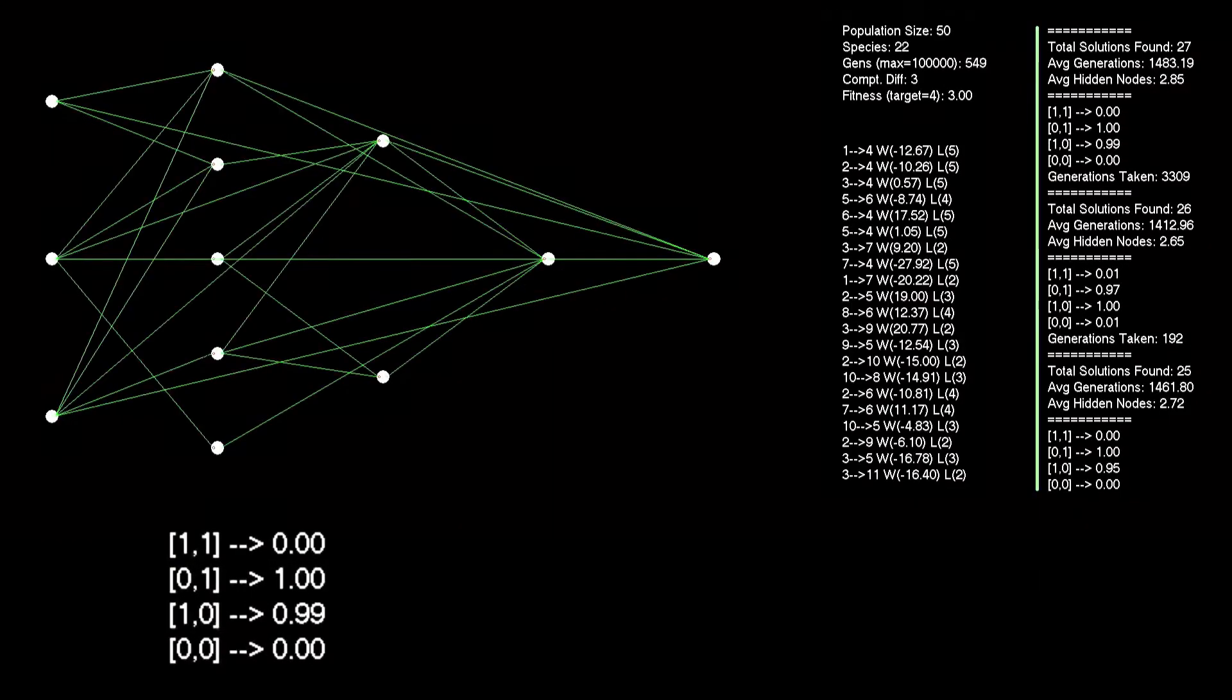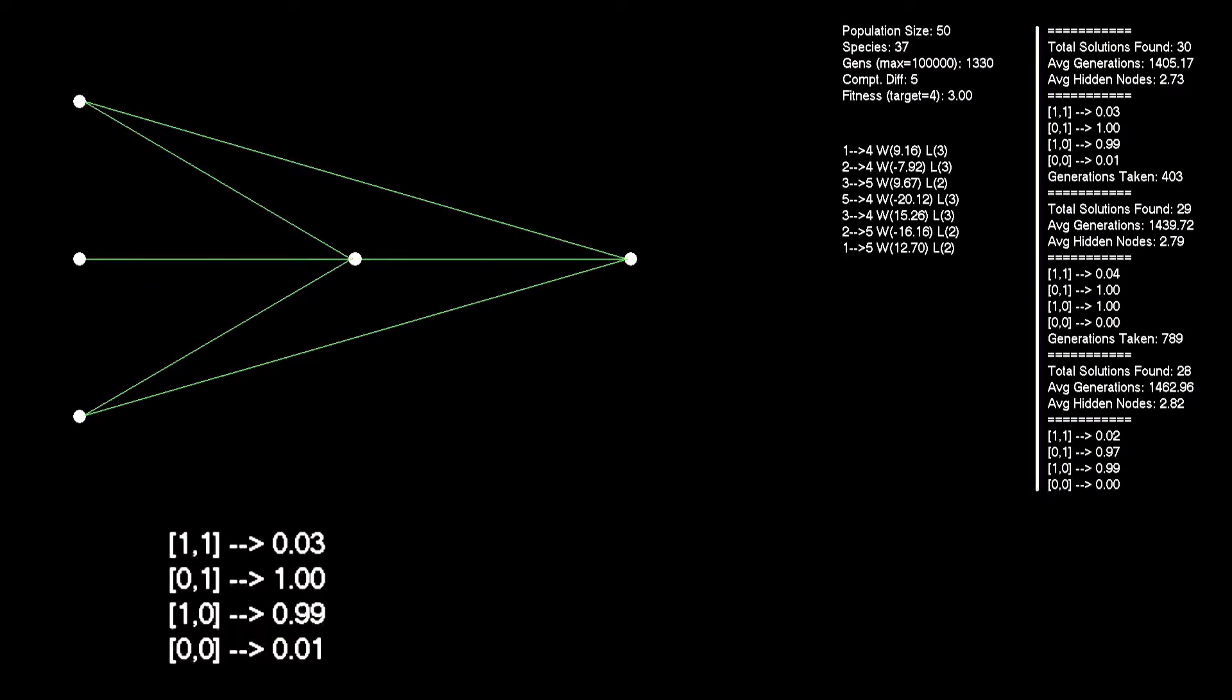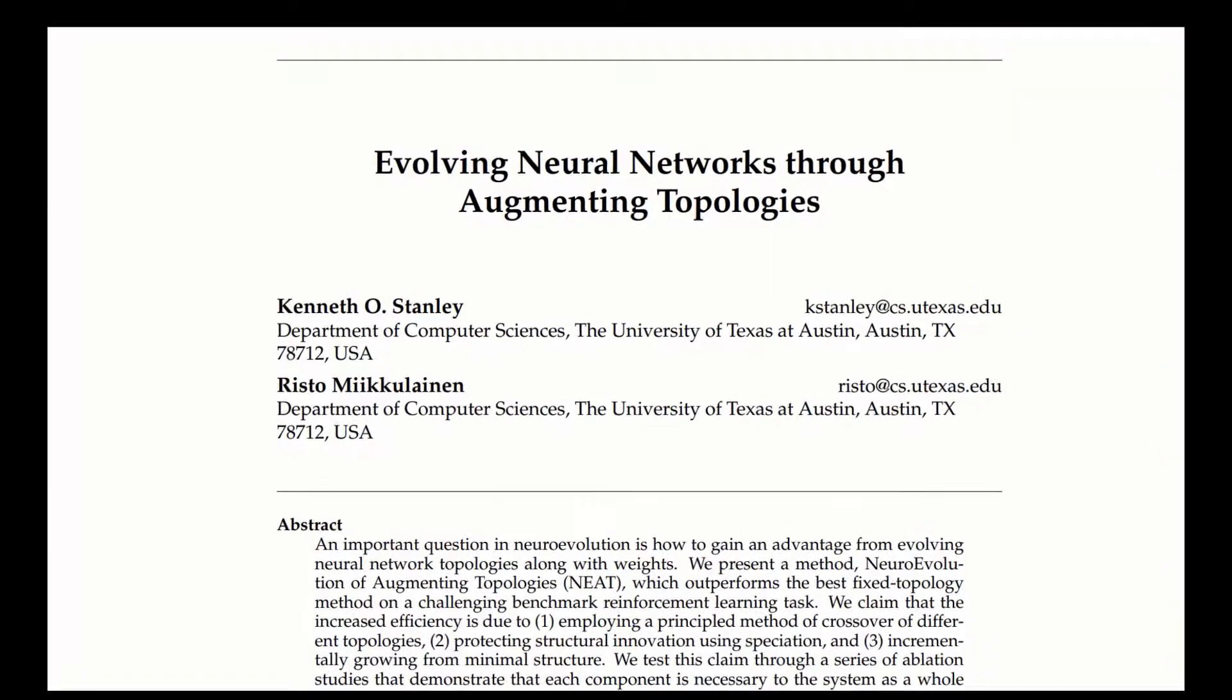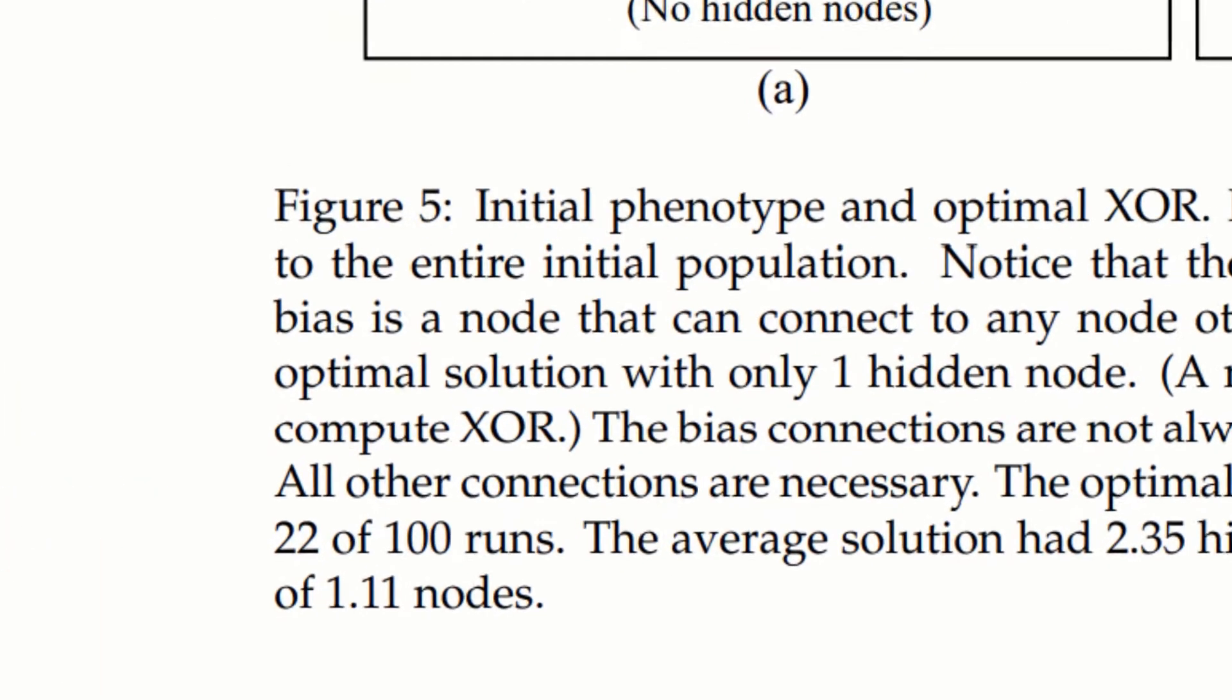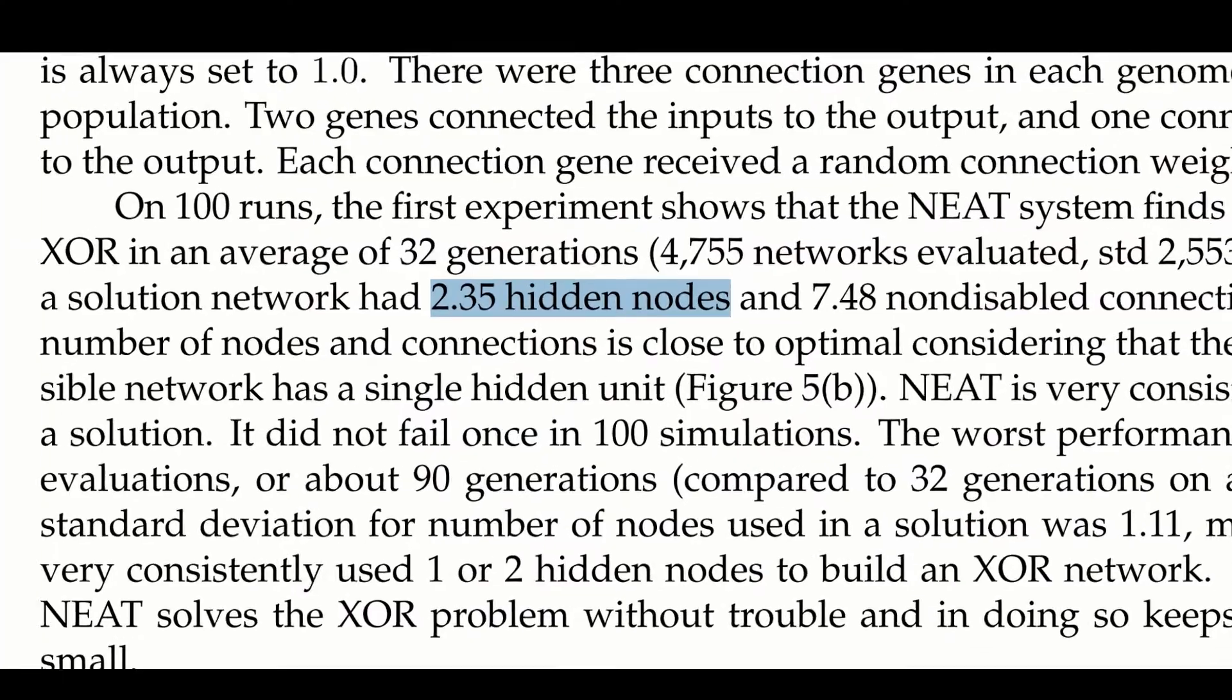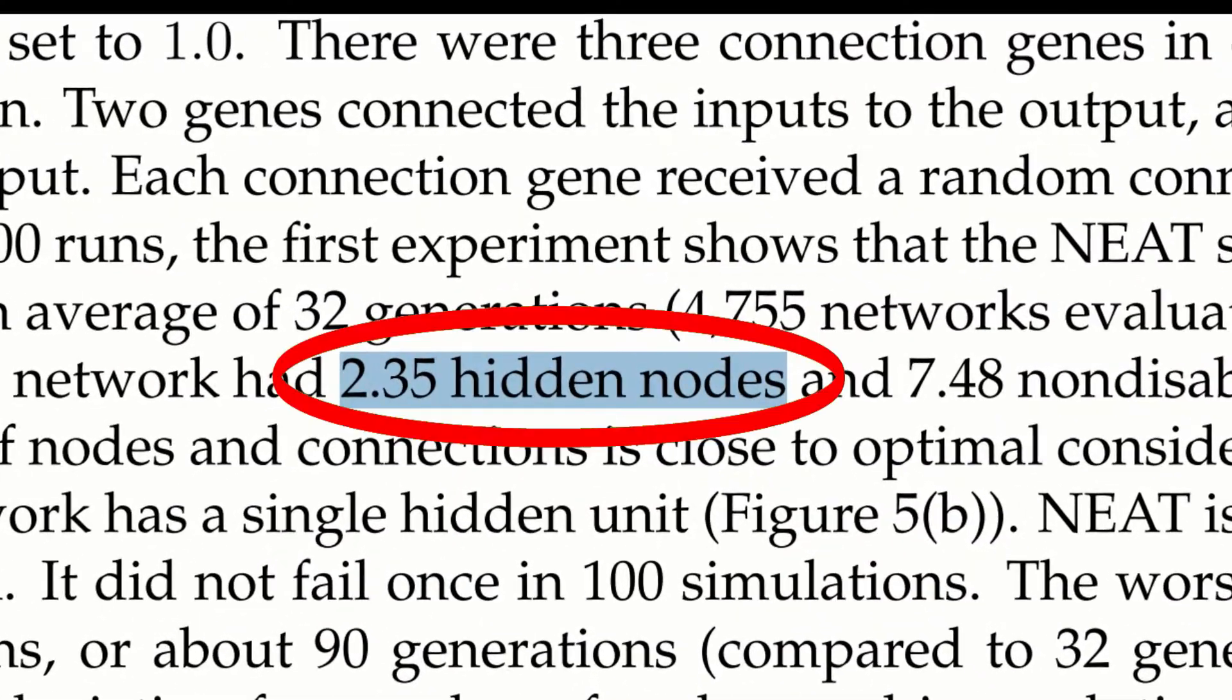That's what it's all about: starting simply and allowing complexity to evolve over time if required, and removing overly complex networks from the search space if they're not improving. This is clearly detailed in the Ken Stanley original paper where he talks about the one-node exclusive OR solution and the percentage of times his network managed to find it compared to other solutions.